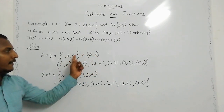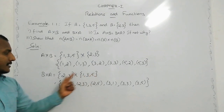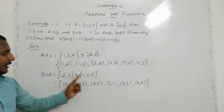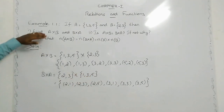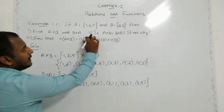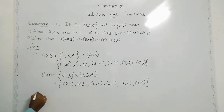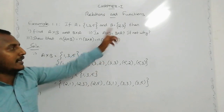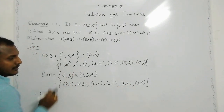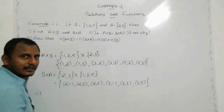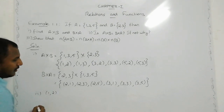So A cross B is: (1,2), (1,3), (3,2), (3,3), (5,2), (5,3). And B cross A is: (2,1), (2,3), (2,5), (3,1), (3,3), (3,5). Second question: is A cross B equal to B cross A? If you compare A cross B and B cross A, for example (1,2) is in A cross B but not in B cross A, so A cross B is not equal to B cross A.